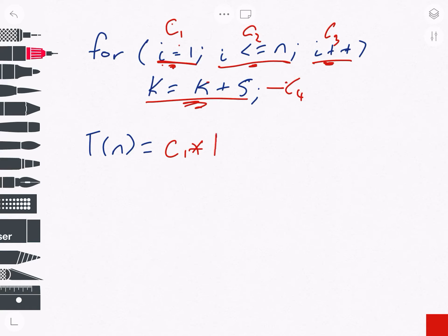Okay, plus C2 times how many times we're going to do the C2 task. Well, let's look at some examples. If n is one, then we check i is less than or equal to one—true, we do the loop, then we add one to i and we go back and we check again. So we actually check twice. If n is one, we check twice. If n is two, we check once for one, once for two, once for three, and then we bump out. So if n is two, we check it three times.